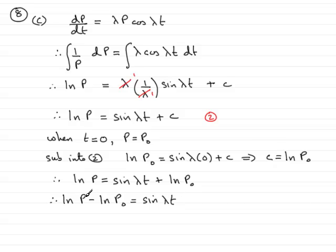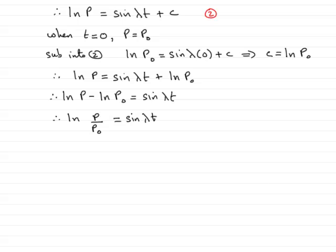Using the division rule for logs, this becomes ln(p/p₀) = sin λt. And what I need to do now is remove the natural log by anti-logging both sides, so that means p/p₀ = e^(sin λt).